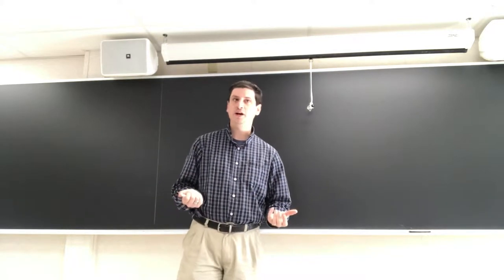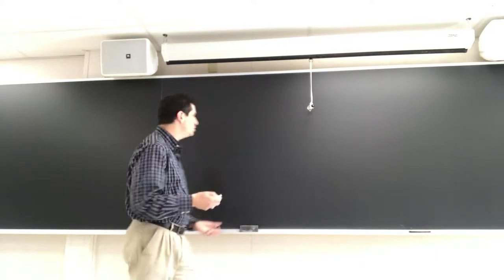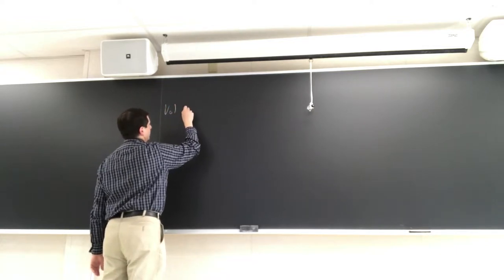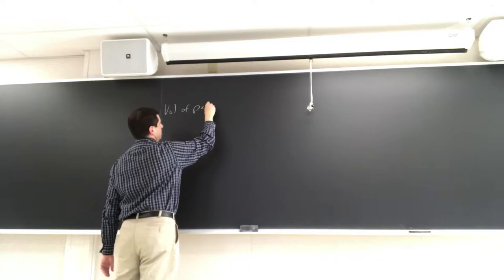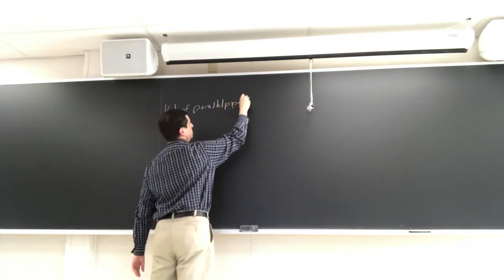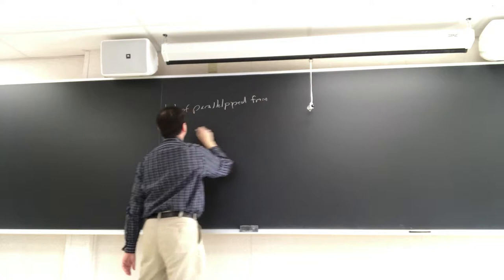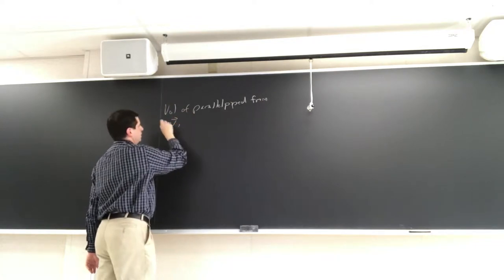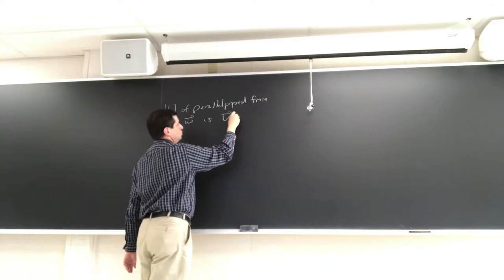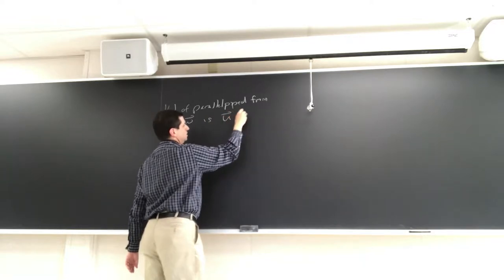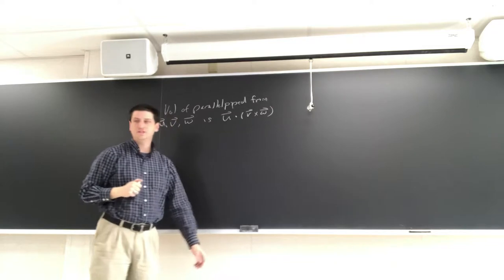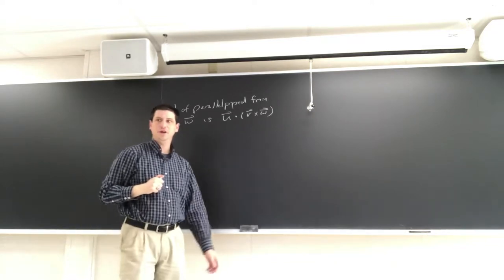We have not done linear algebra right now, but we at least showed that the volume of the parallelepiped from vectors u, v, w is u dot (v cross w). This is the stuff from chapter 11 coming to save the day.